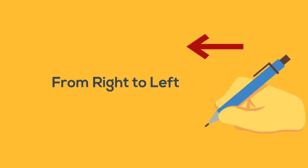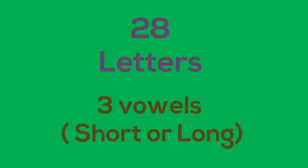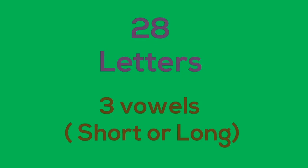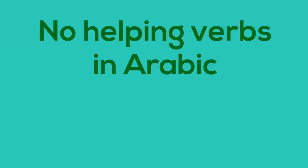Arabic is written from right to left, and here's the good news: there are no capital letters. There are 28 consonants and three vowels, which can be short or long. The short vowels are marks written above or below the letter, and there are no helping verbs in Arabic.